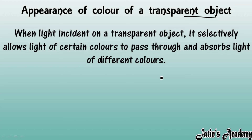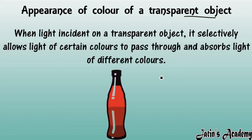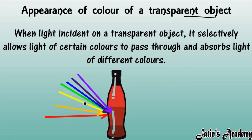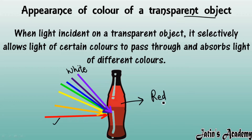For example, we have a red bottle. When this red bottle is kept in white light — white light being a mixture of colors — this red bottle will reflect red color. That is why in white light, the red bottle is seen as red only.